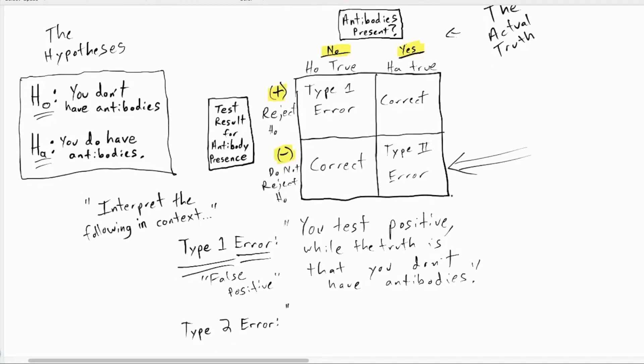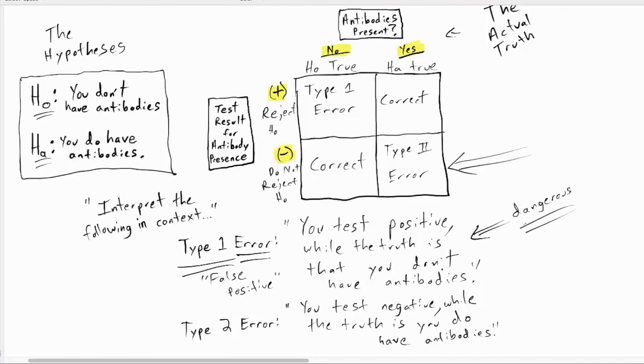A type two error requires what kind of test result? Get a negative test result. You test negative while the truth is that you do have antibodies. Exactly. Which one of these is worse, do you think? It's situation dependent. Just like is this rare depends on the situation. If people test positive, they don't actually have it, they could think that they're immune when they're not. A type one error, you would like to make that as small as possible because in this case, it's putting people at risk.